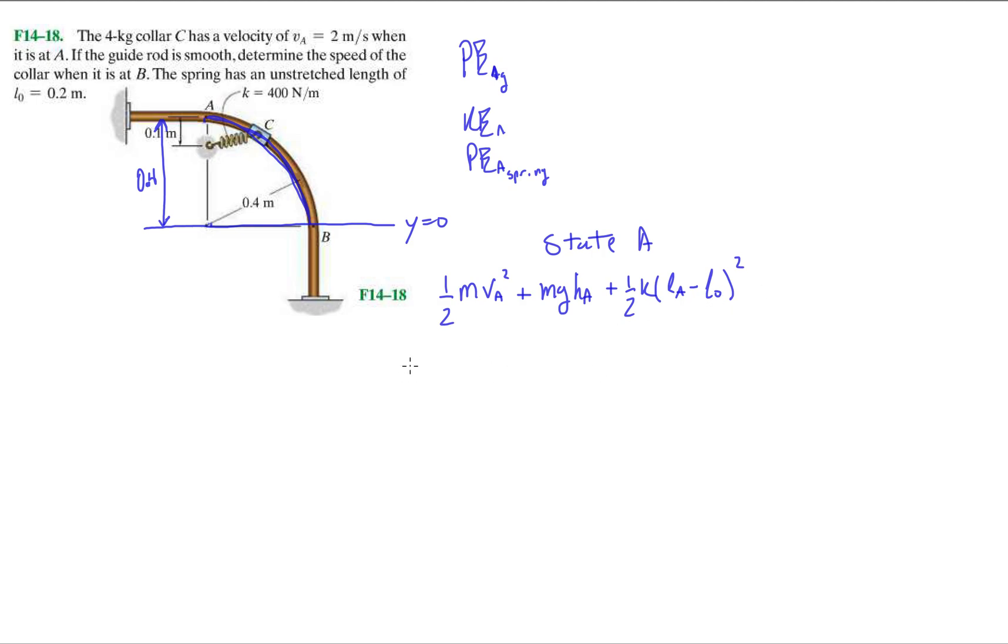All this has to equal the kinetic energy at point B, plus the potential energy gravitational potential energy at position B, times 1 half K, the length of the spring at B minus its initial length. Those two have to equal each other.